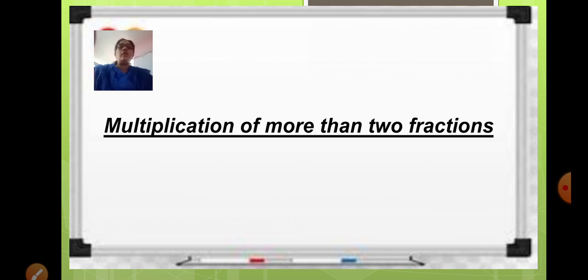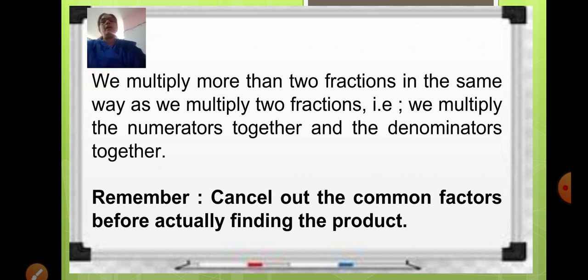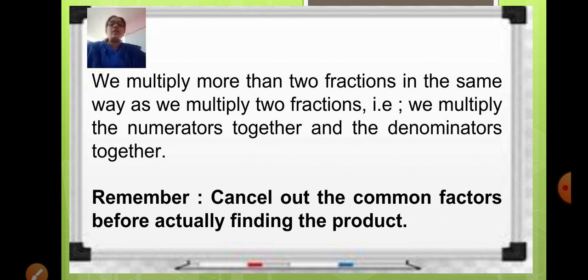And also we will learn about the properties of multiplication of fractions. Now before we start, just remember that we multiply more than 2 fractions in the same way as we multiply 2 fractions. That is, we multiply the numerators together and the denominators together. Also remember to cancel the common factors before actually finding the product.